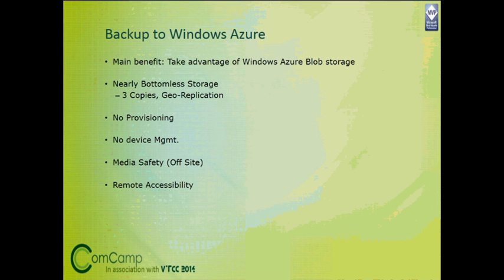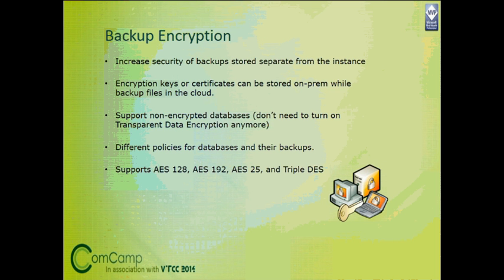Let's start restoring from the full backup. Once the full backup restore is done, we restore from the first log backup. Now let's restore from the tail log. We will recover the database and see if we are able to read the data. We get the records, restore is complete, we can see the customer table and all the data. That's how we recover from a corrupted database by taking a tail log backup and restoring it on top of other backup files.